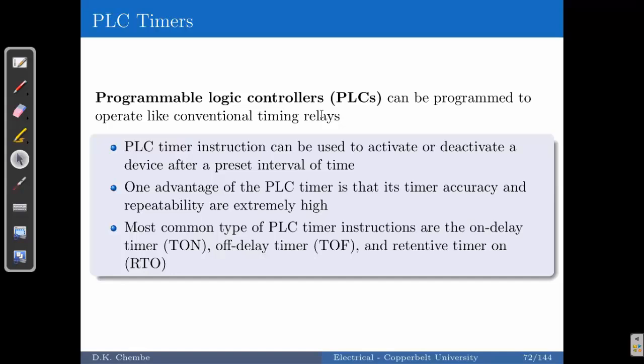PLC timers can be used to activate or deactivate various devices in industry. The advantages of PLCs include that they are very accurate and have high repeatability, meaning they can operate for a long period doing the same sequence or pattern. The most common PLC timer instructions are the on-delay — called TON (timer on delay) — the off-delay timer — called TOF — and a retentive timer called RTO.